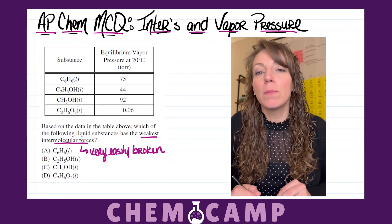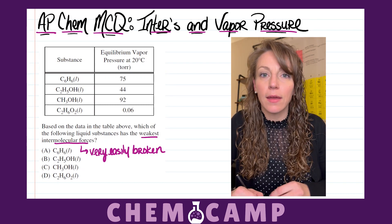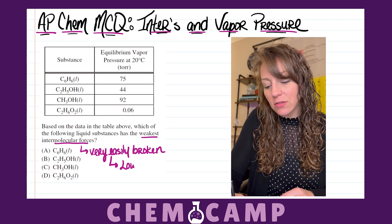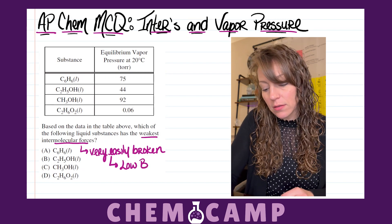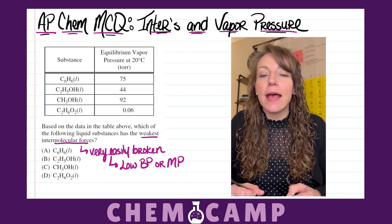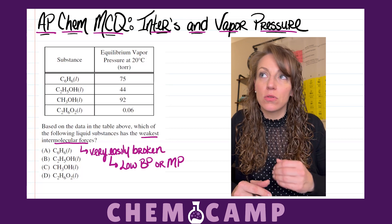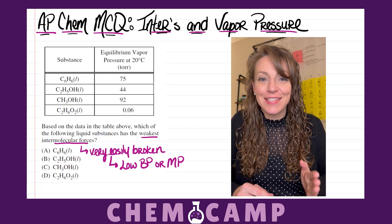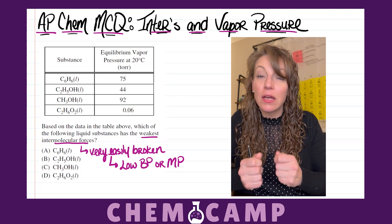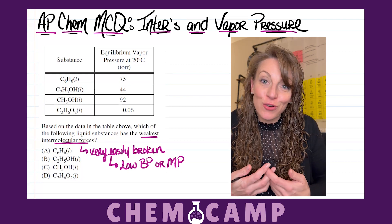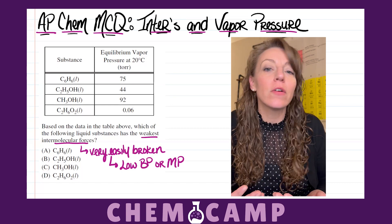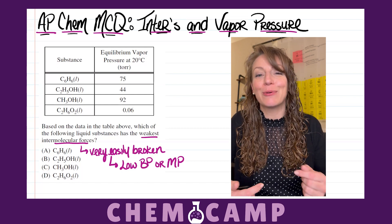There are a few different pieces of lab data that indicate weak intermolecular forces, so let's review them. The first is a low boiling point or a low melting point. As a substance transitions from the solid state to the liquid state, or the liquid state to the gaseous state, you actually have to break those intermolecular forces. If they're easily broken, it won't require much energy, which results in a low boiling point and a low melting point.